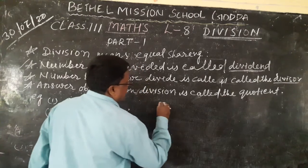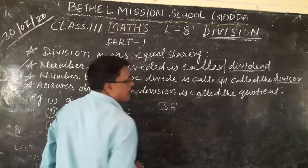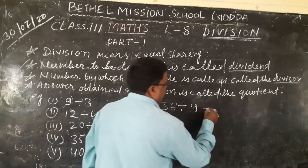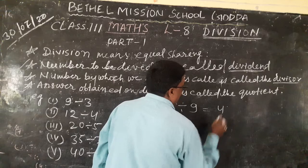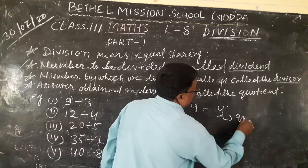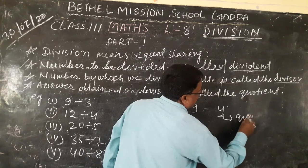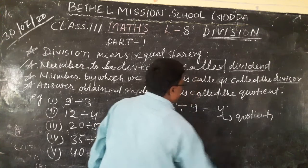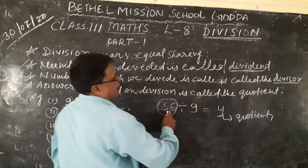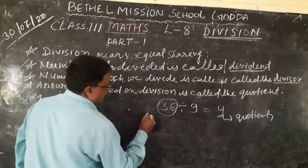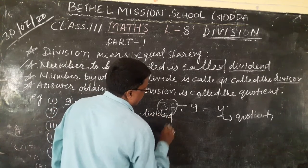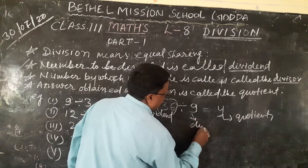36 divided by 9 equals 4. So 4 is the answer, so this is called the quotient. And 36 is the dividend, because this number is divided by 9. And 9 is called the divisor.